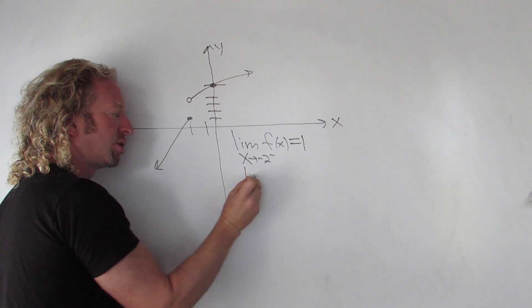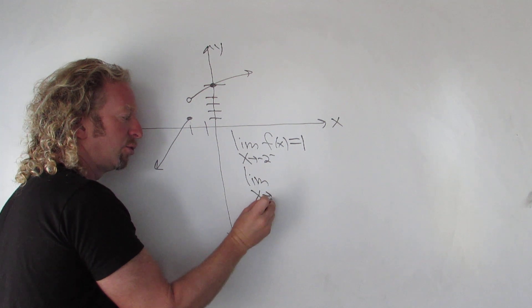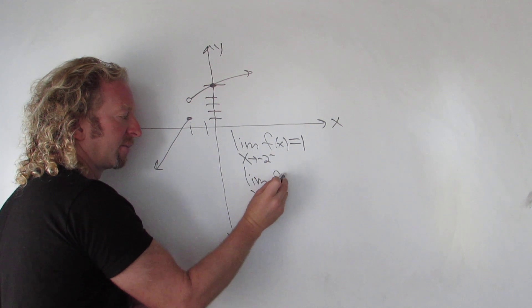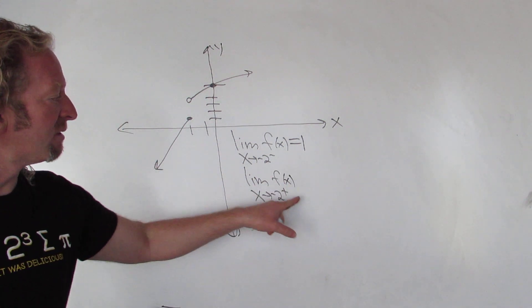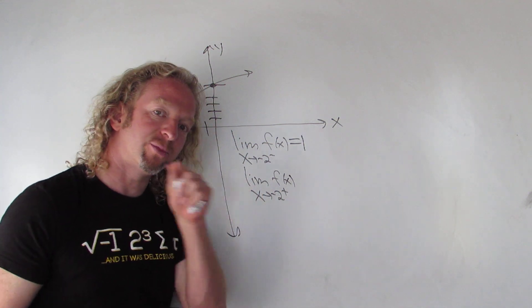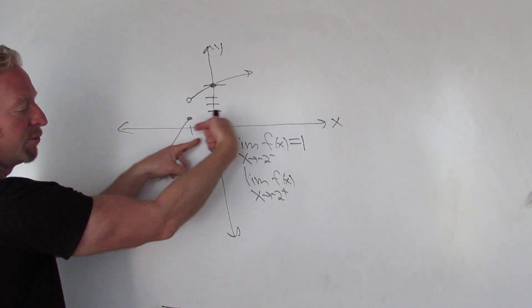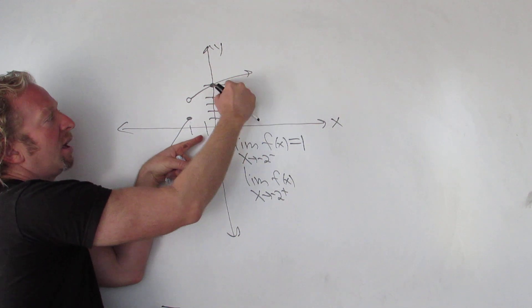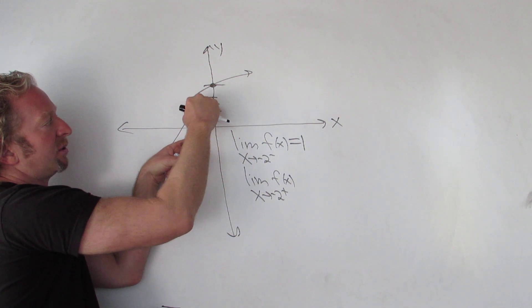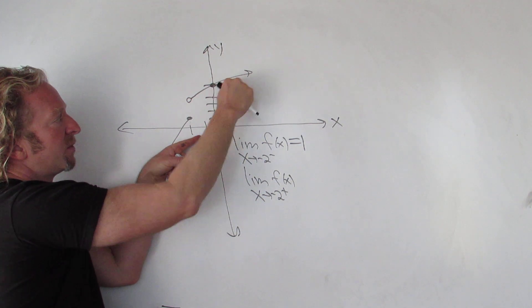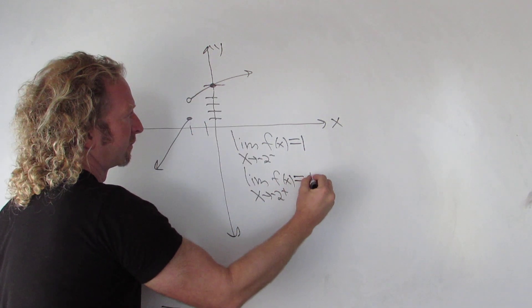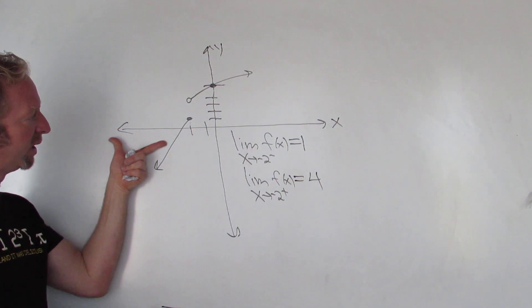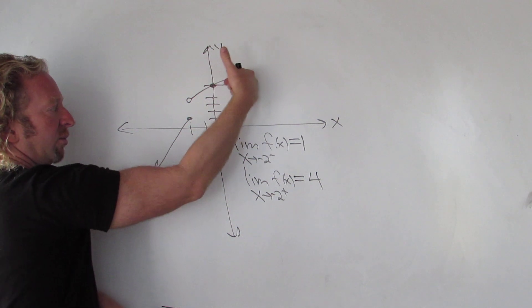Let's do the same thing, let's approach negative 2 from the right. So this is the limit of f of x as x approaches negative 2 from the right. So now we're approaching negative 2 from this direction. So as you approach from this direction, the y-value gets really close to this little hole here. So 1, 2, 3, 4. So the answer is 4. So from the left, we get 1. From the right, we get 4.